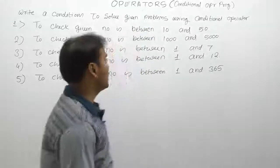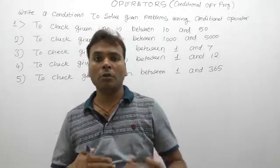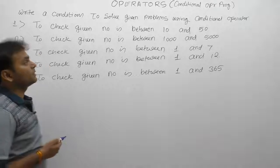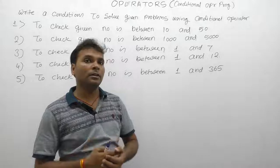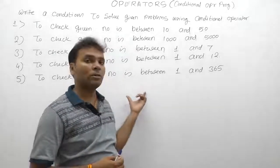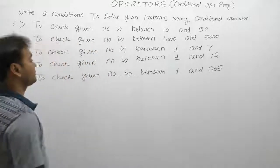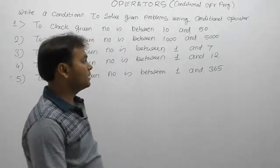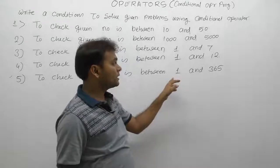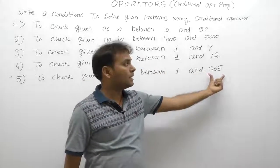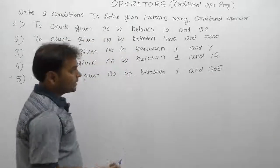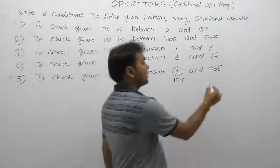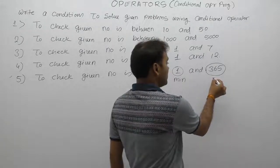Let's see another problem — same kind — but here we are testing whether a given number belongs to a given range or not. By using this concept with different cases, we are checking lower limit and upper limits. If you have any number, check whether it exists in a particular range — like a minimum range and maximum range. For example, checking if a given number is between 1 and 365. Here, 1 is the minimum limit and 365 is the maximum limit.